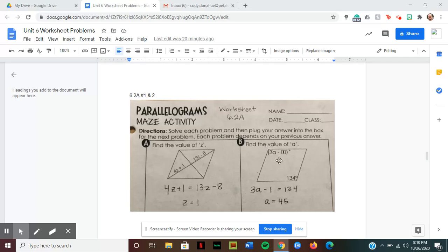Now we're asked to find the value of a, given these values: 3a minus 1 degrees and 134 degrees. Another key fact that we learned about parallelograms in class comes from number 3 in our notes, which says that opposite angles of a parallelogram are congruent to one another.